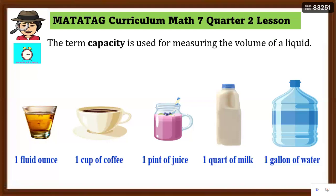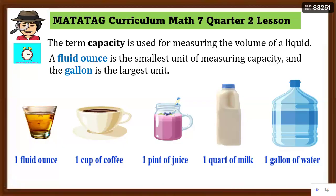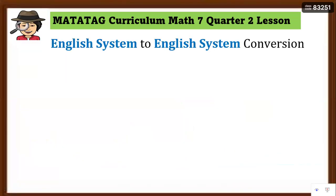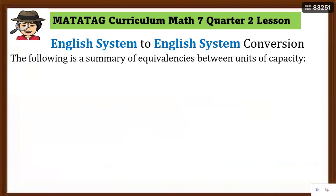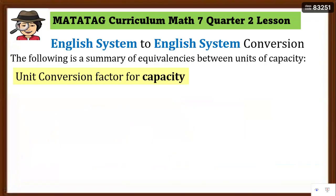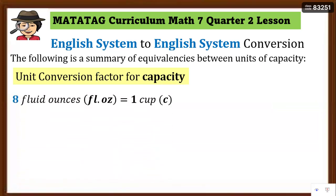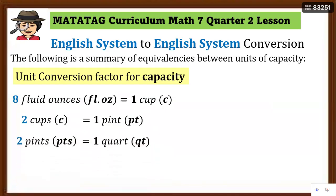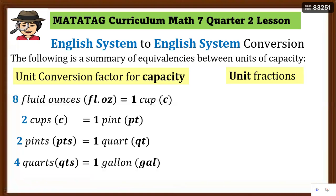The term 'capacity' is used for measuring the volume of a liquid. Take note: a fluid ounce is the smallest unit for measuring capacity, and the gallon is the largest unit. Here is a summary of the equivalences between units of capacity. The unit conversion factors are: 8 fluid ounces equals 1 cup; 2 cups equal 1 pint; 2 pints equal 1 quart; 4 quarts equal 1 gallon.